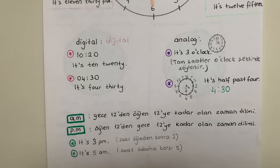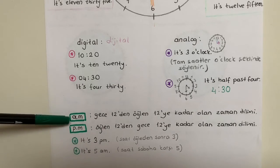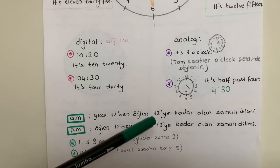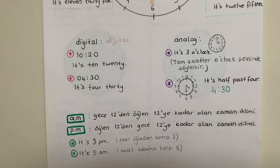ülkeler 12 saat olarak kullandığı için şu şekilde ayırmışlar. Eğer gece 12'den öğlen 12'ye kadar olan bir zaman diliminden bahsediyorsam, PM kullanıyorum.